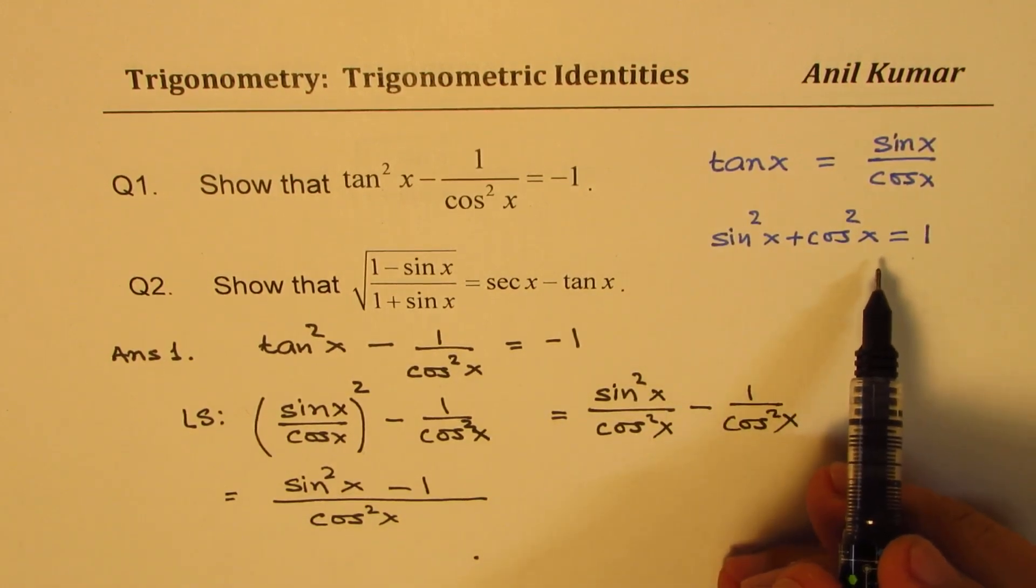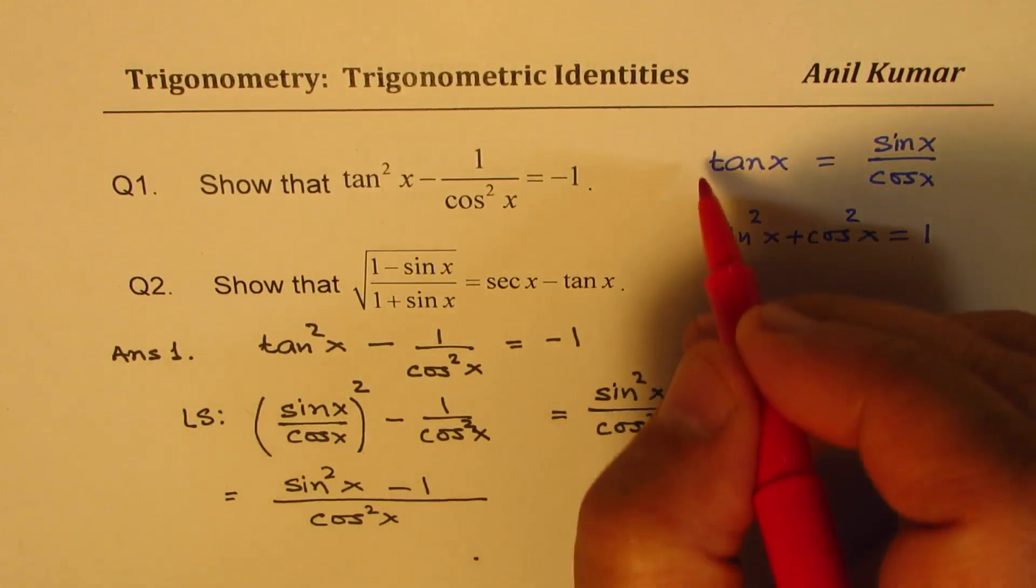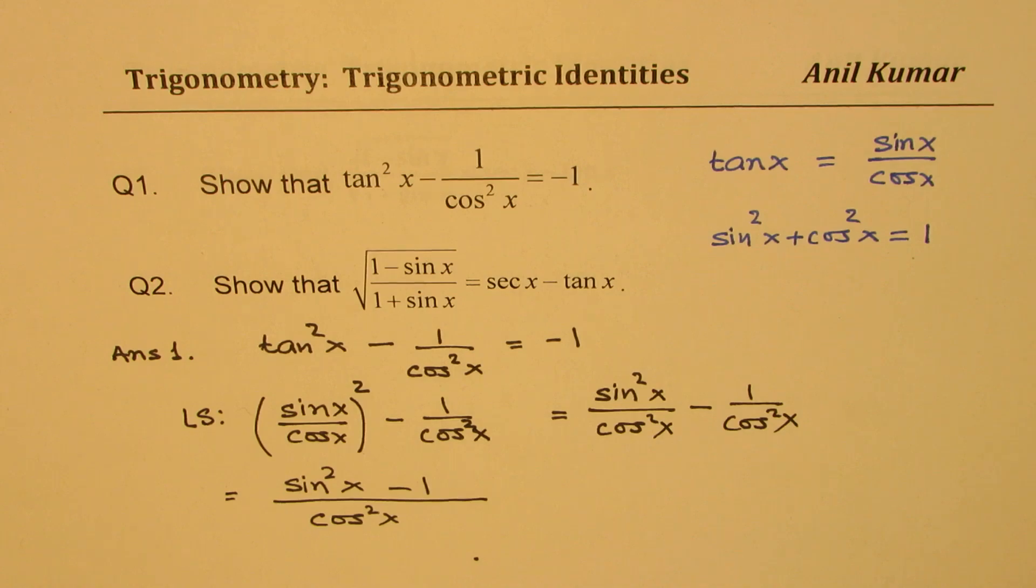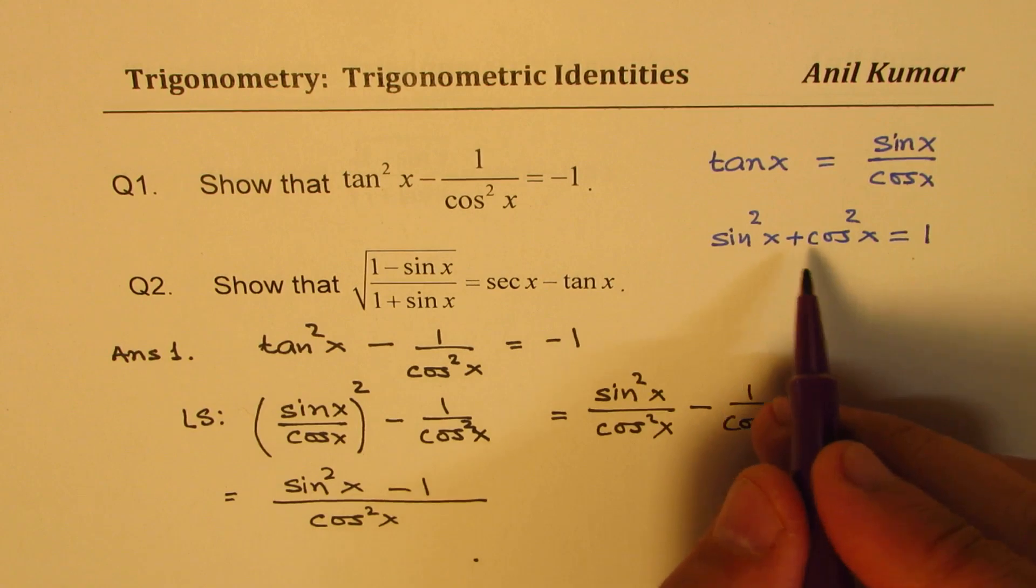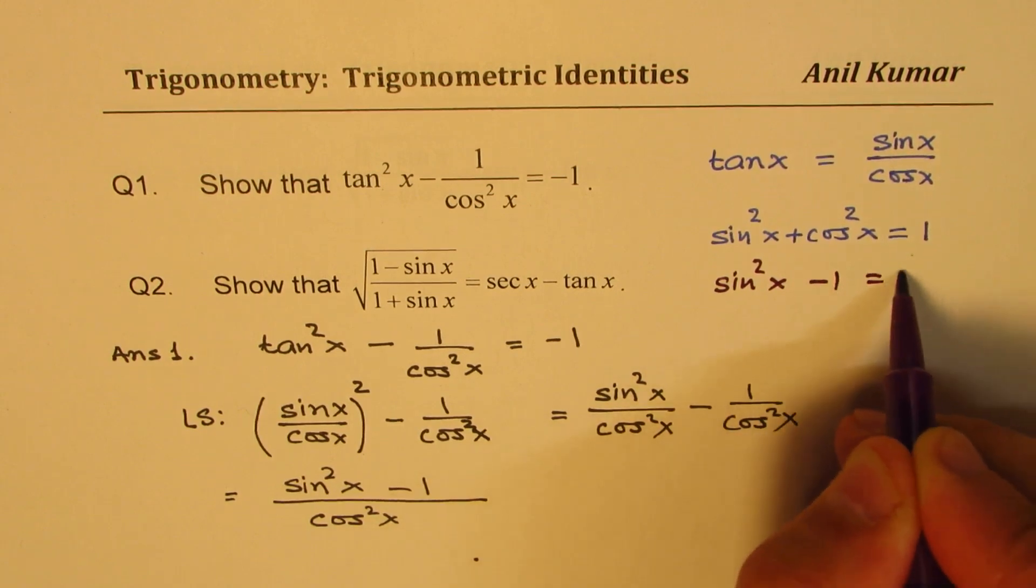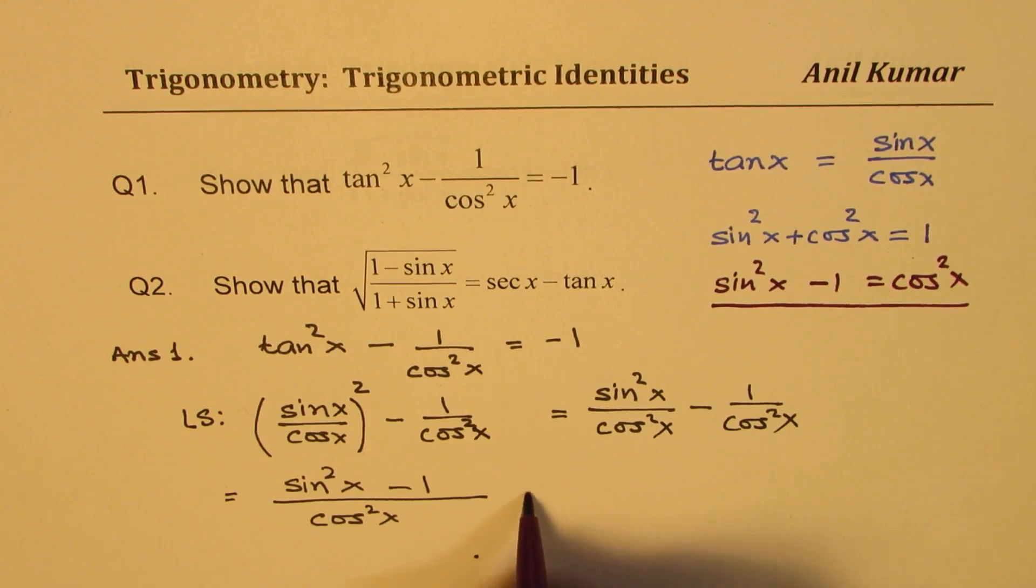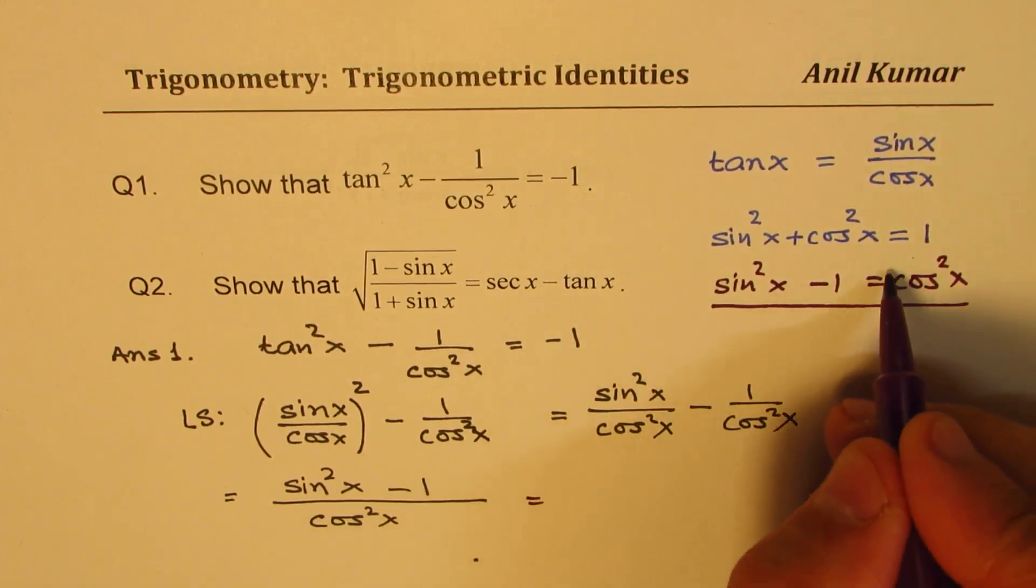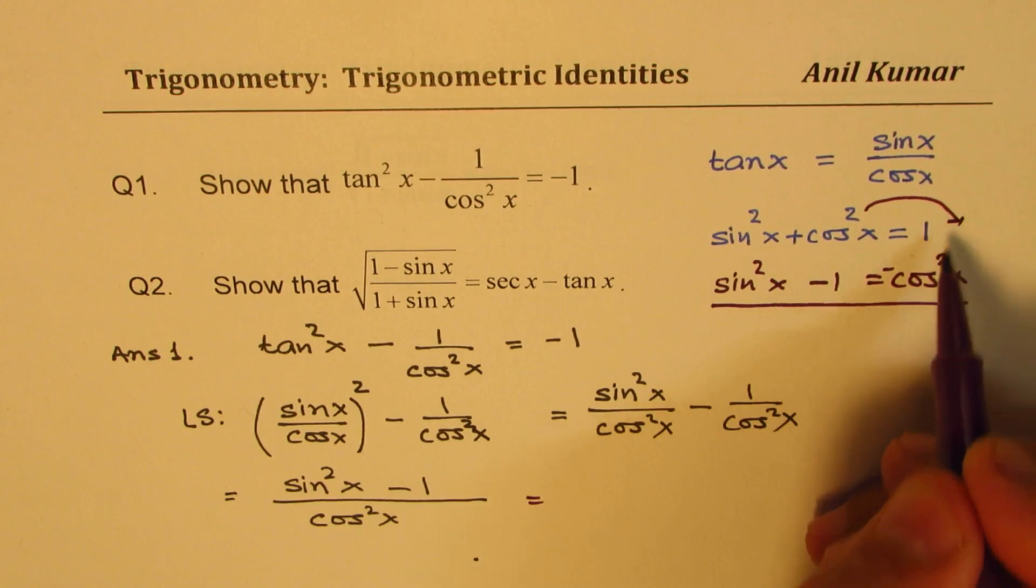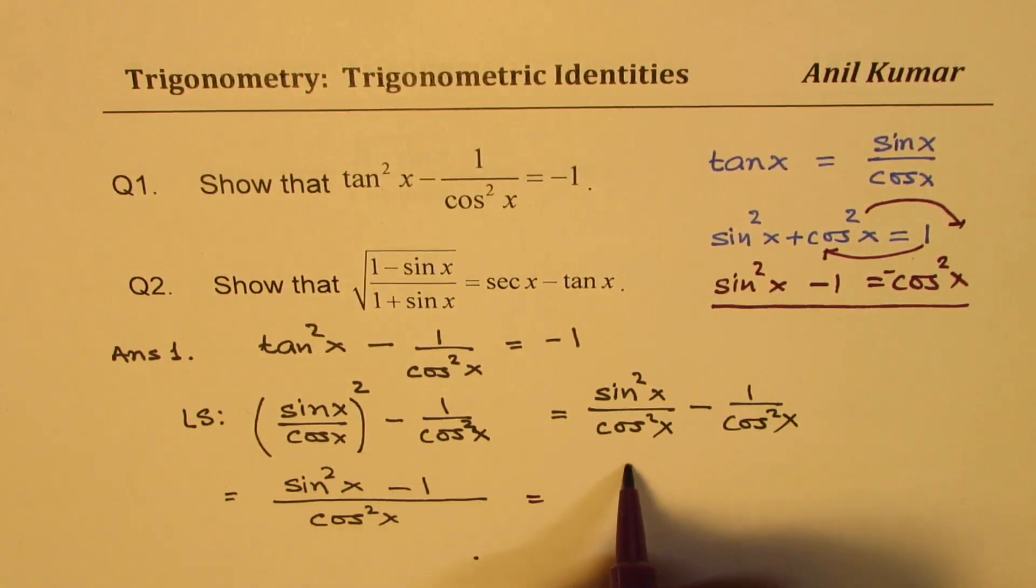Now, in this equation, which is a Pythagorean identity, let's rearrange. So if you rearrange, what do you get? Sin²x - 1 is equal to what? Well, let's bring this 1 here. So we get sin²x - 1 = -cos²x. So we'll use this right here. So we're going to replace the numerator by -cos²x.